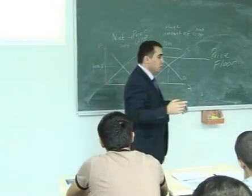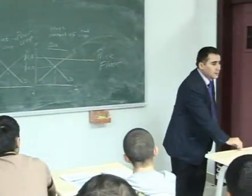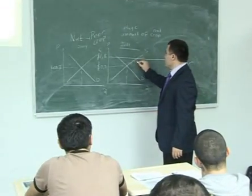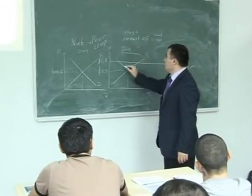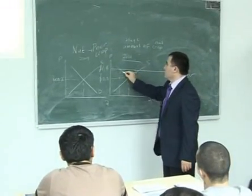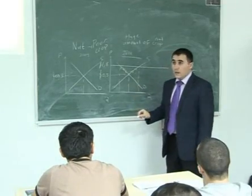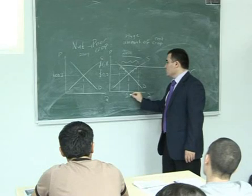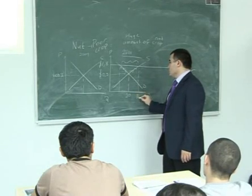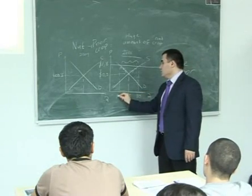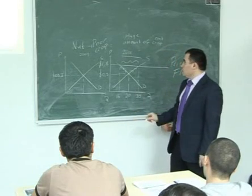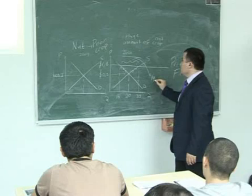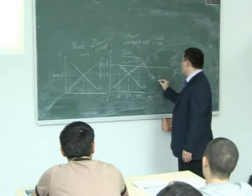So in this case, you know what's going to happen - surplus. There will be an increase in supply and a decrease in demand, and there is a surplus. Let's say that supply is 30,000 tons, demand is 16,000 tons, so we are having 14,000 tons of surplus.